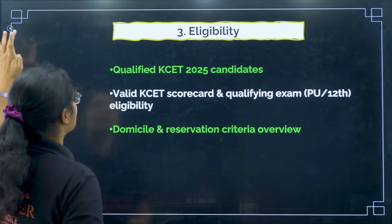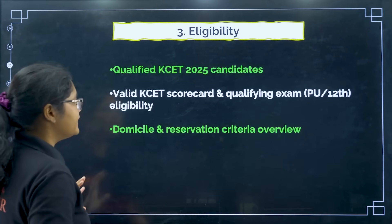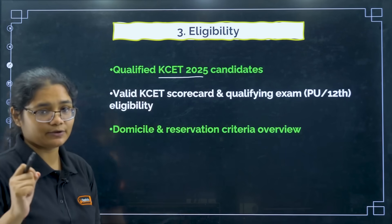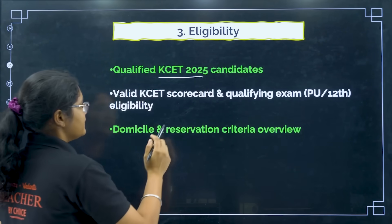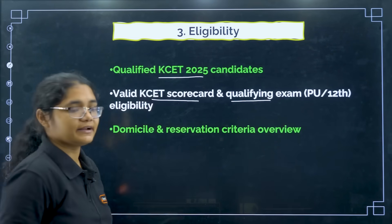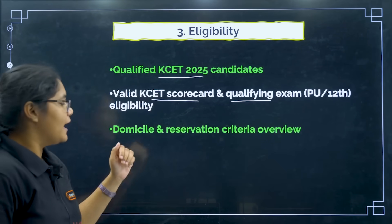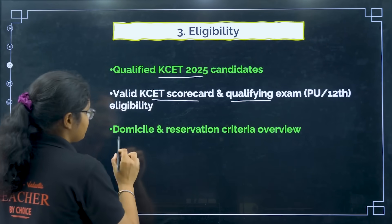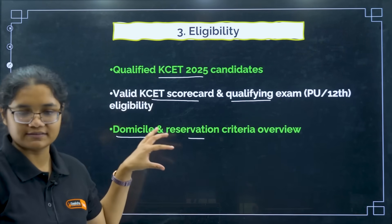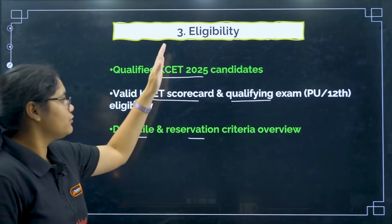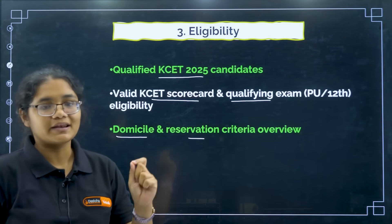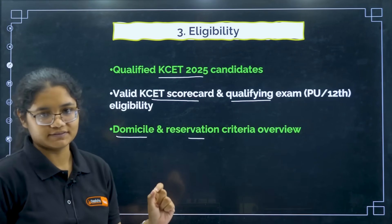Regarding eligibility: all students who have qualified the KSEA 2025 examination, have a valid KSEA scorecard, have qualified the PU2 examination, and meet the domicile and reservation criteria based on their category — if you have all these three requirements, then you are eligible for the counselling process.